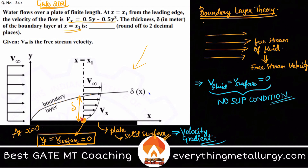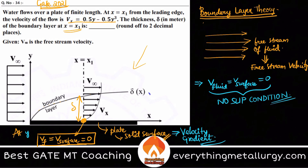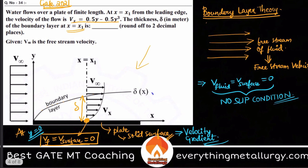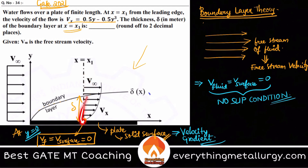So: first condition — velocity at the plate where y equal to zero, we have a no-slip condition. Second case is the velocity gradient. As you move away from the plate along the y direction — the vertical displacement — there is a velocity gradient. This velocity gradient is given as a function of y. That is why vx is given as 0.5y minus 0.5y cubed — it is a function of y.